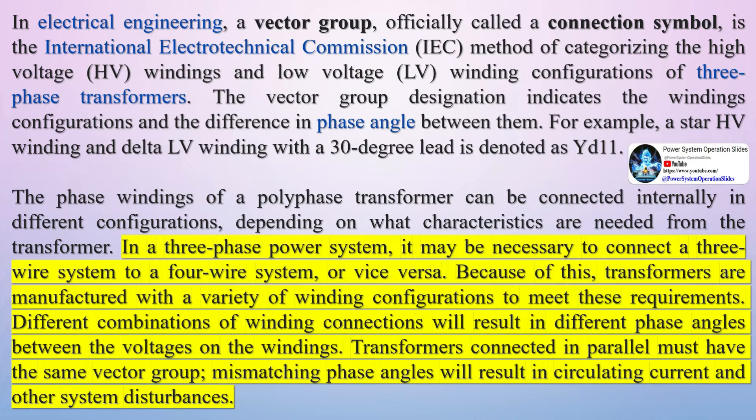The vector group indicates the phase difference between the primary and secondary sides, introduced due to that particular configuration of transformer windings connection.